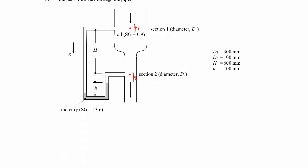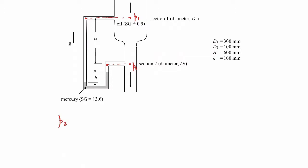From the manometer, since gravity is pointing downward, the pressure at p1 will be the same pressure horizontally. Same thing with p2. Starting at p1, we're going to go down through the oil to the mercury surface, adding the weight of the oil: plus rho_oil times g times the distance. That distance is capital H plus little h plus some unknown distance x.